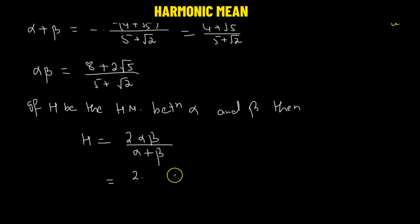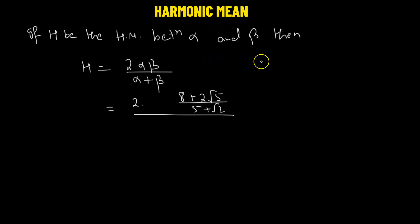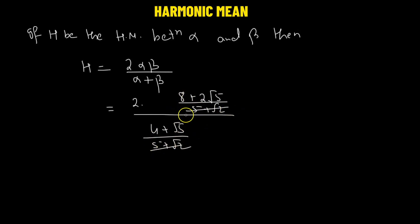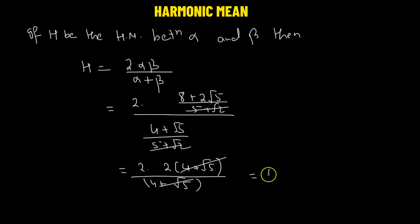Substituting the values: H = 2 times (8 + 2√5)/(5 + √2), whole divided by (4 + √5)/(5 + √2). We can cancel (5 + √2) from the numerator and denominator. Then we factor out 2 from (8 + 2√5), giving 2 times (4 + √5). Dividing numerator and denominator by (4 + √5), we are left with the value 4. So the harmonic mean equals 4.